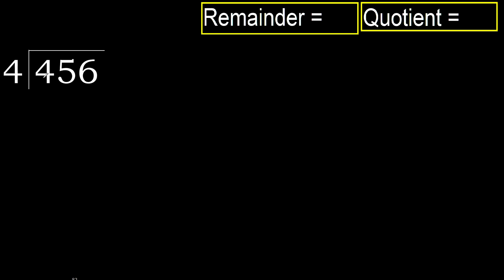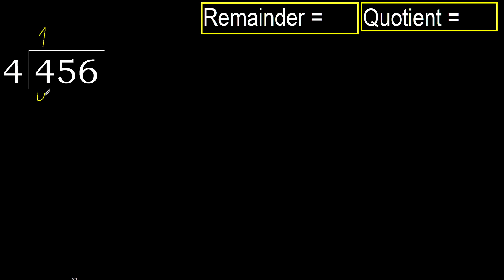456 divided by 4. 4 is not less, therefore work with 4. 4 multiplied by which number is nearest to 4 but not greater? 4 multiplied by 2 is 8, which is greater. 4 multiplied by 1 is 4, which is not greater. 4 minus 4 is 0.